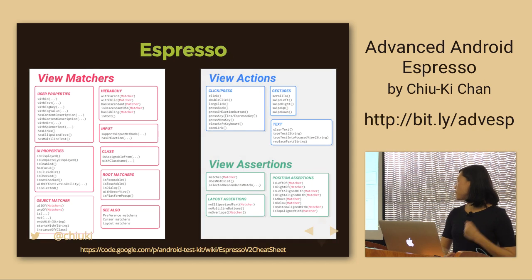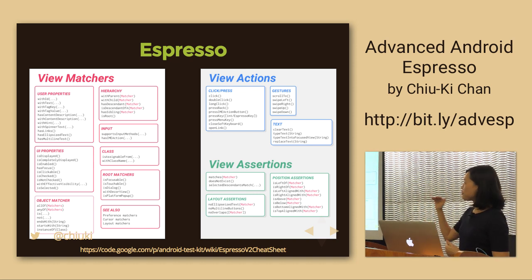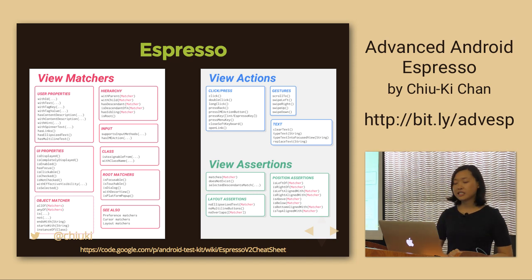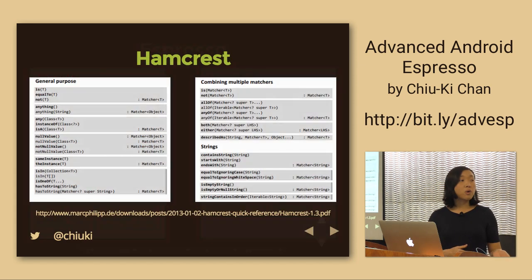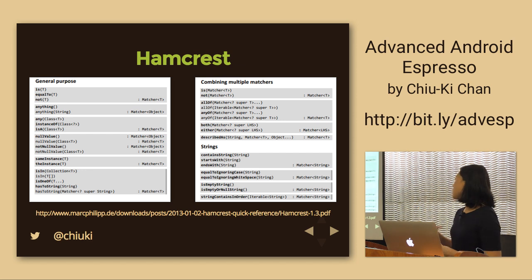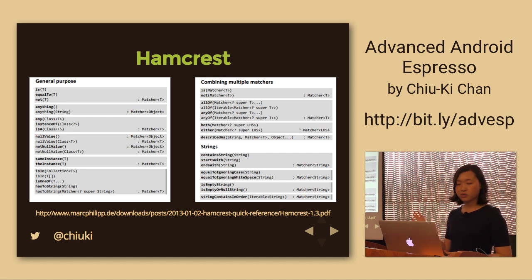Here are all the Espresso view matchers, view actions, and view assertions you can use. We're not going through all of them today — that would be pretty boring. I just want to show this slide because there's a cheat sheet you can grab when writing your own tests. Hamcrest also has a cheat sheet; the 'not' operator and 'allOf' get used quite a bit.